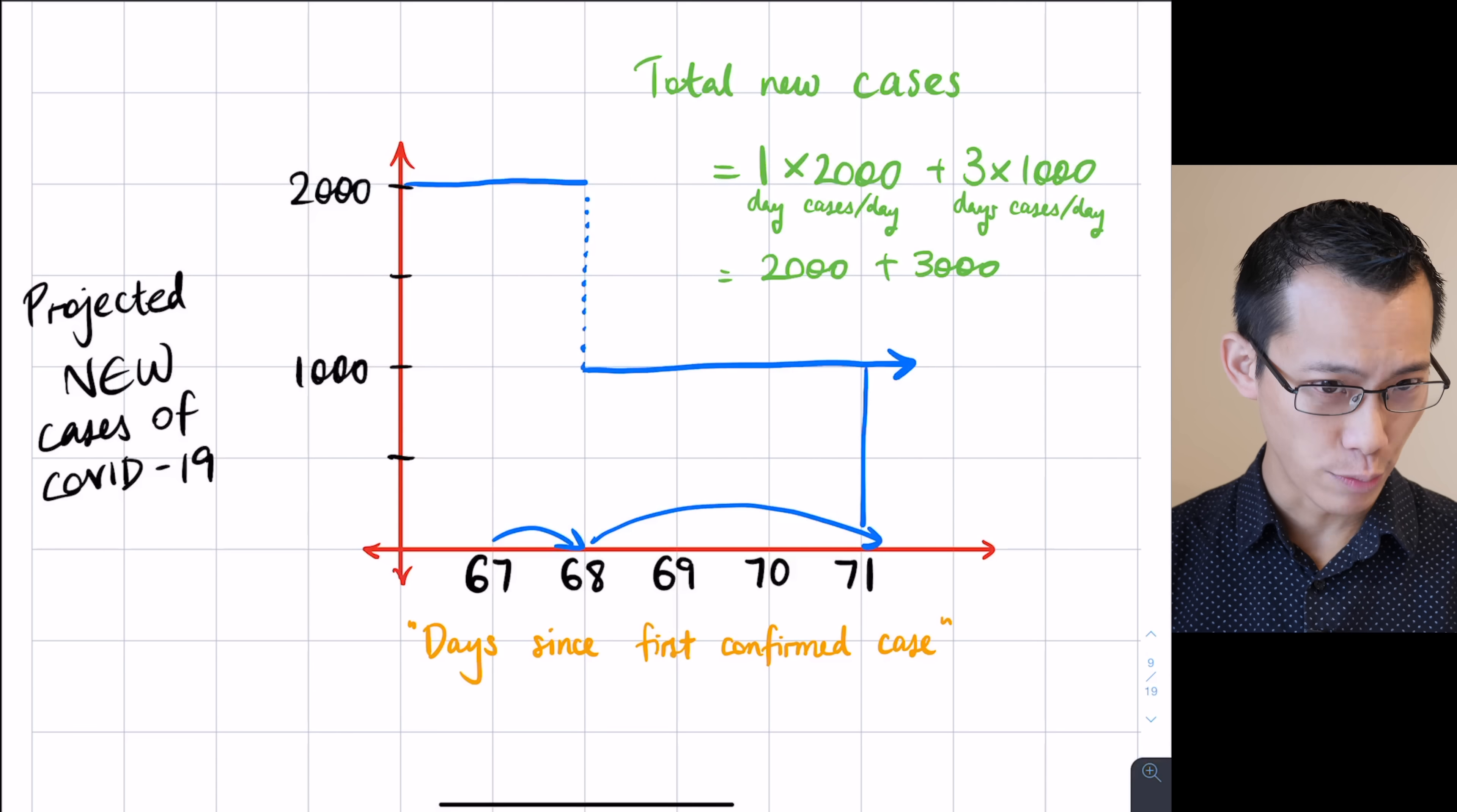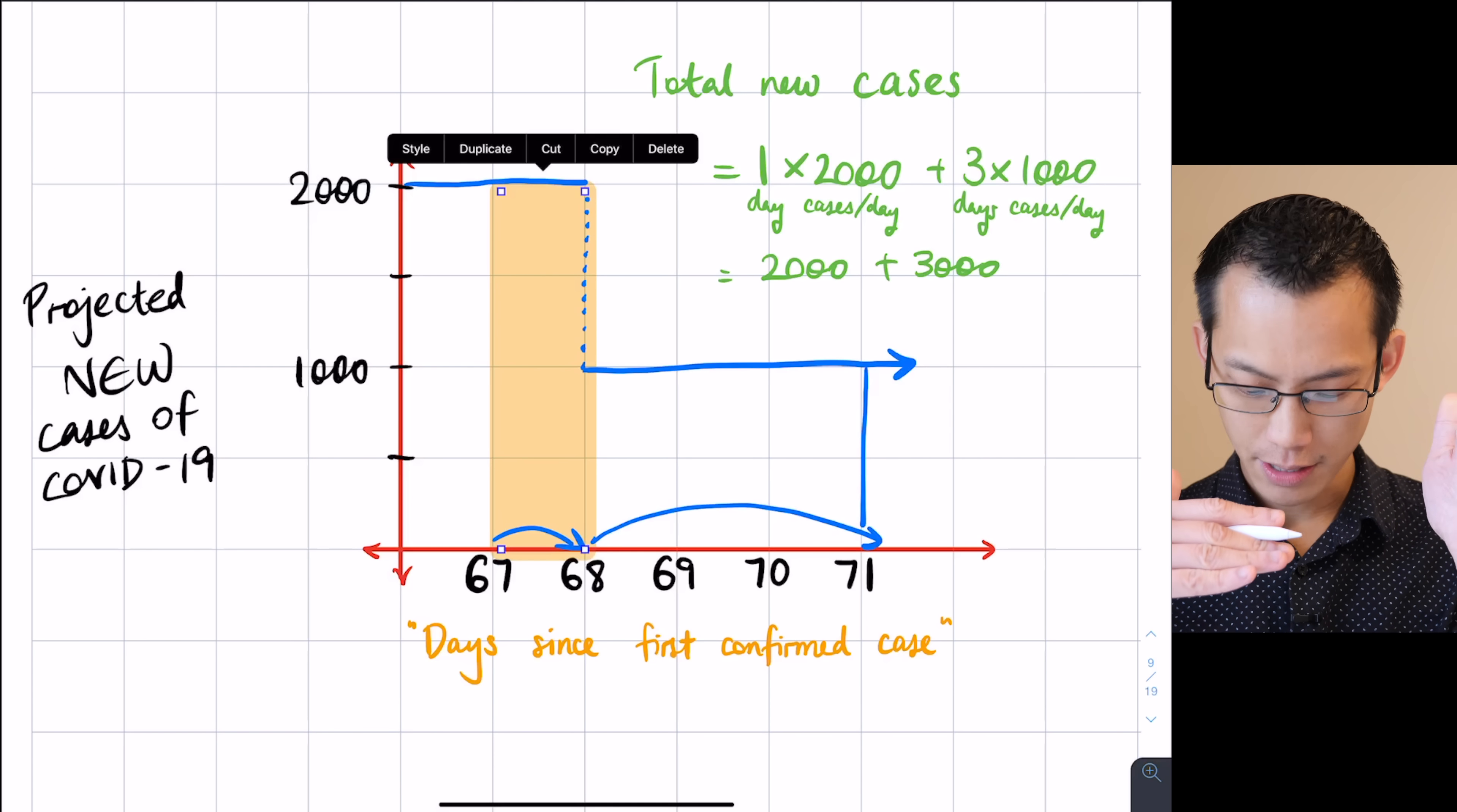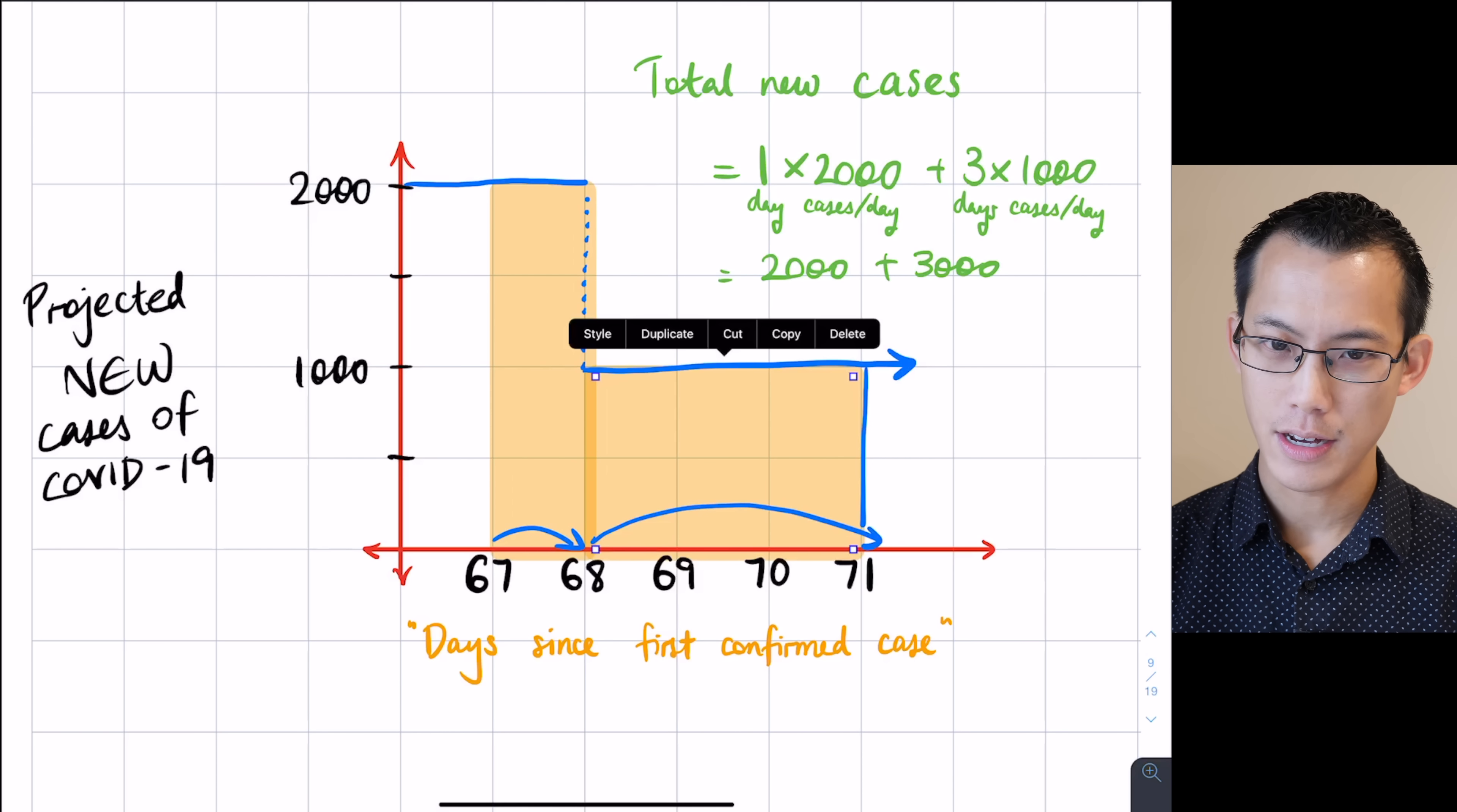If I only gave you this derivative graph, you could work it out by saying, oh, one times 2,000 actually represents, I'm going to draw a rectangle in here, this area up the top. That's the one, which is the width, and the 2,000, which is the height. And then in addition to that, I also have this other guy over here, another rectangle, which is three wide and it's 1,000 tall. I'm calculating, like we looked at last lesson, the area under the curve.